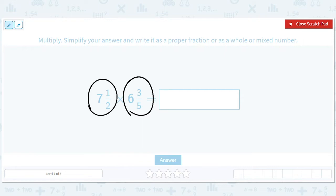So there are a lot of steps. This is going to be seven times two plus one over two times six times five plus three over five. So it's going to be fifteen halves times thirty-three-fifths.